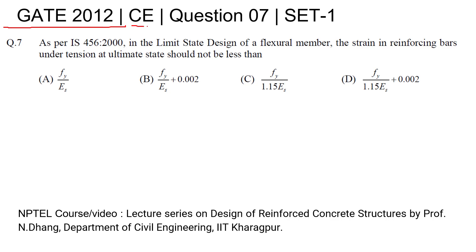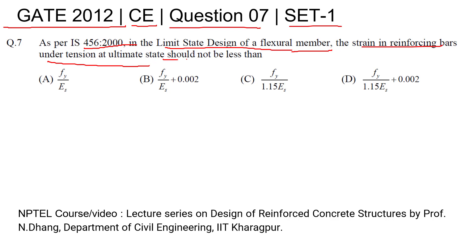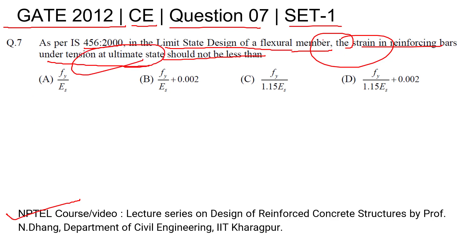GATE 2012 Civil Engineering question number 7, Set 1. As per IS 456:2000, limit state design of flexural members: the strain in reinforcing bar under tension at ultimate state should not be less than what? You can refer to this NPTEL video lecture. He's asking about the strain in the reinforced bar under tension at the ultimate state.